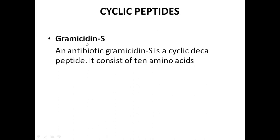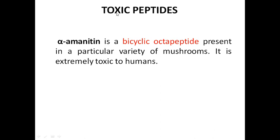Decapeptides contain 10 amino acids. Angiotensin 1 and calidine are examples of decapeptides containing 10 amino acid residues. Cyclic peptides: Gramicidin S is an antibiotic with a cyclic structure consisting of 10 amino acids. Toxic peptides: alpha-amanitin is a bicyclic octapeptide found particularly in a variety of mushrooms. It is extremely toxic to humans — when these mushrooms are consumed, it causes pain in the gastrointestinal tract, vomiting, diarrhea, and nausea. Death can also occur within a week due to impairment of liver and kidney function.